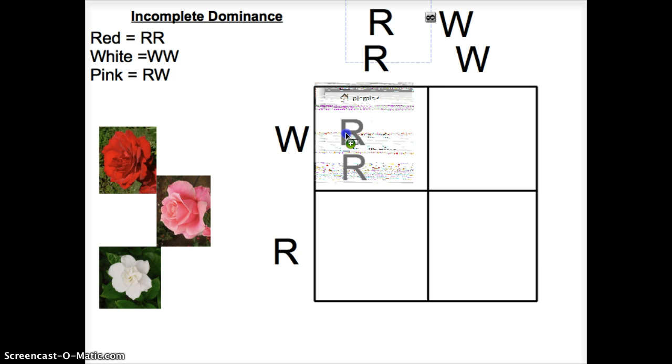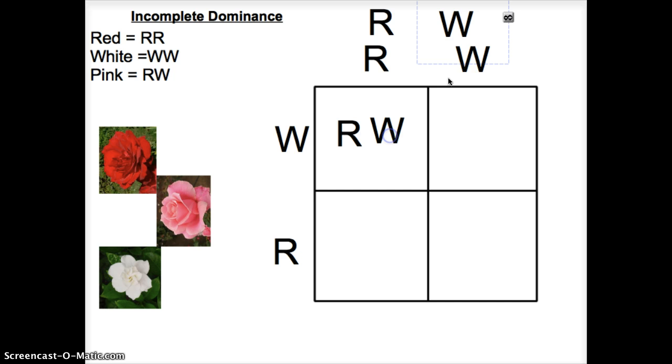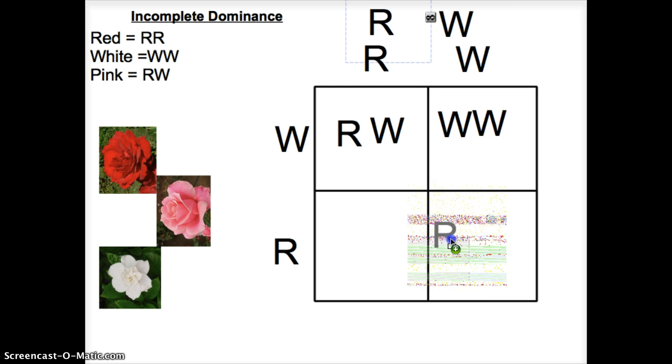So if you want to add a Punnett square, it would be, this one would be RW. This one here would be WW. This one down here would be RW. Because it's still the same exact rules of Punnett squares. And this would be RR.